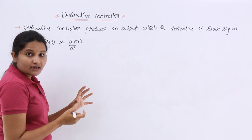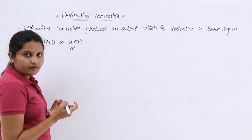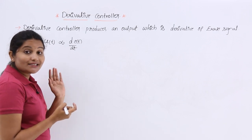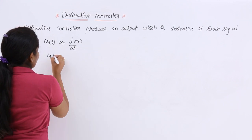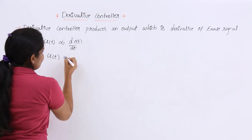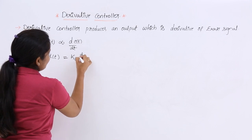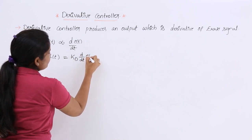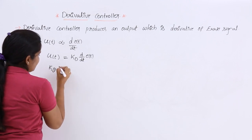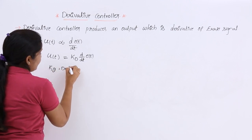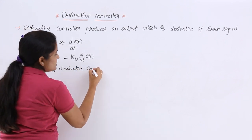To express the proportionality, I am going to introduce a proportionality constant called the derivative constant. For better understanding, I am calling that as the derivative constant Kd. So, u(t) = Kd × d(e(t))/dt, where Kd is the derivative constant.